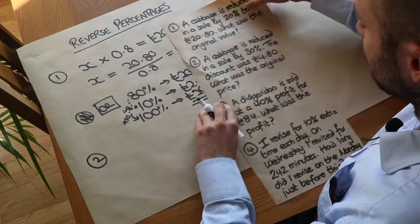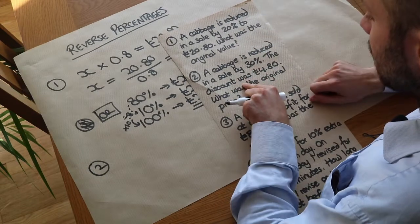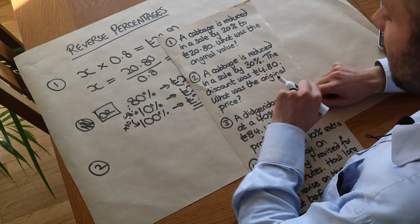What about the second question? A cabbage is reduced in a sale by 30%. The discount was £4.80. What was the original price?